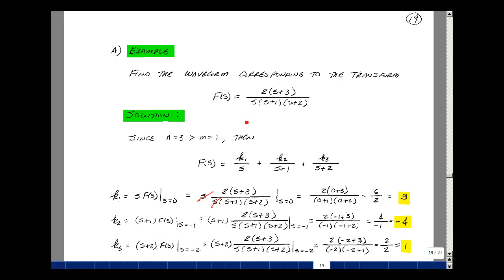Find k2 the same way. Multiply our function by (s+1), the terms cancel, and let s equal -1. So we have 2(-1+3)/[(-1)(-1+2)]. That's 4 over -1, or -4.